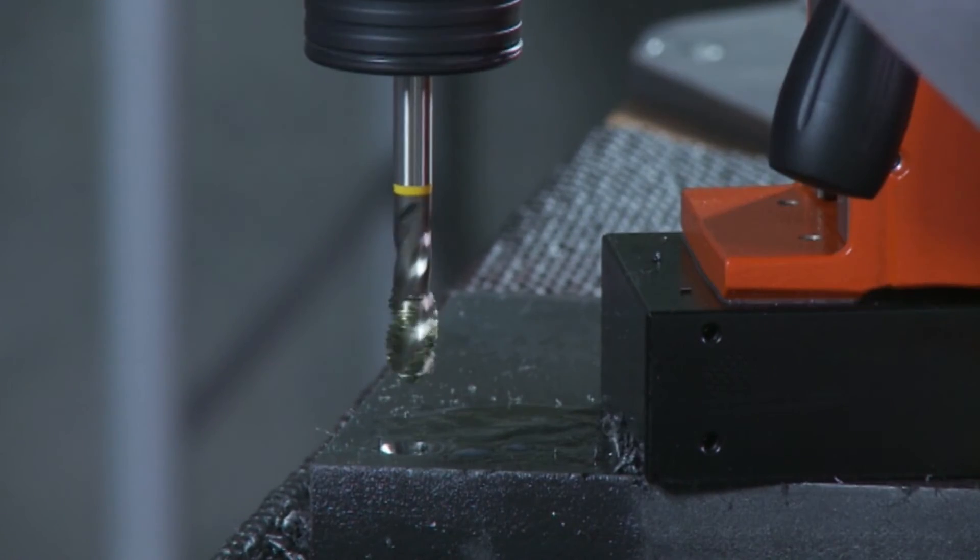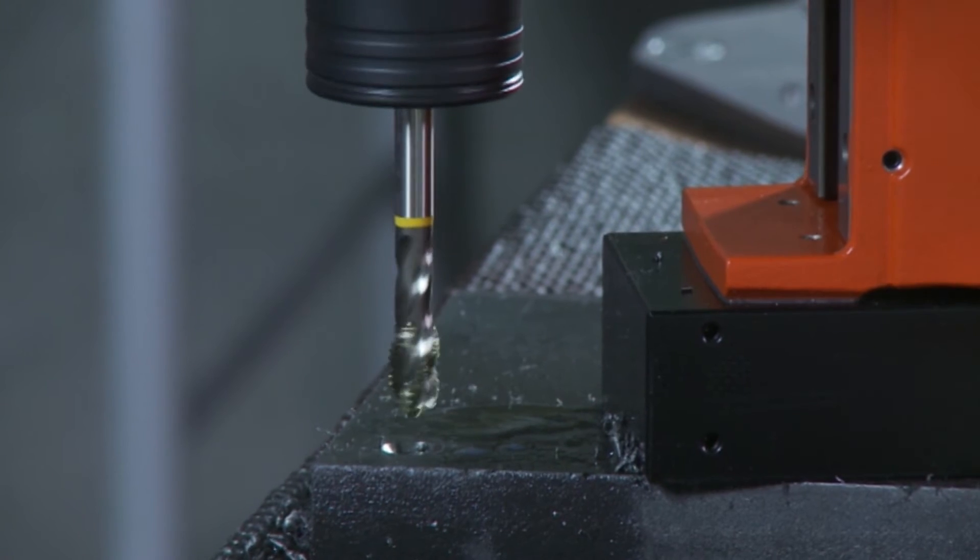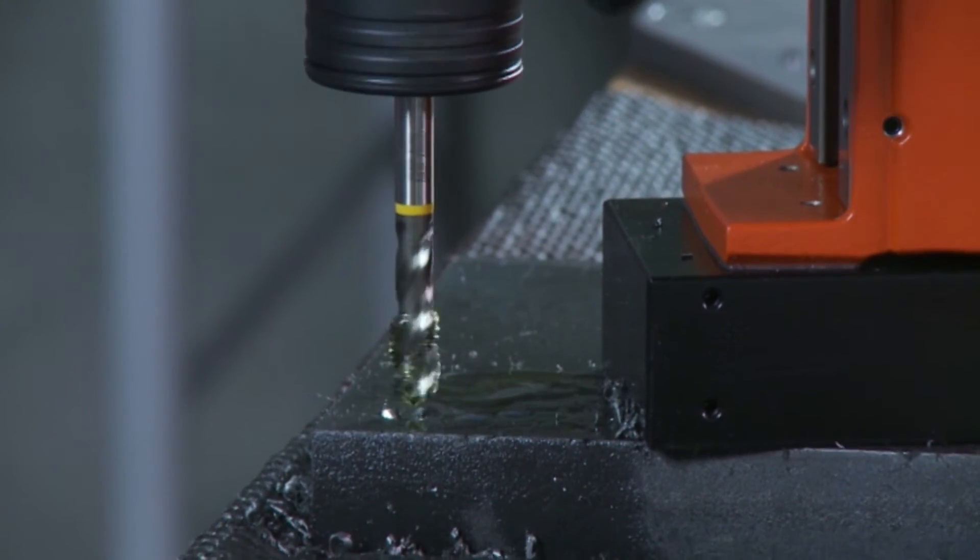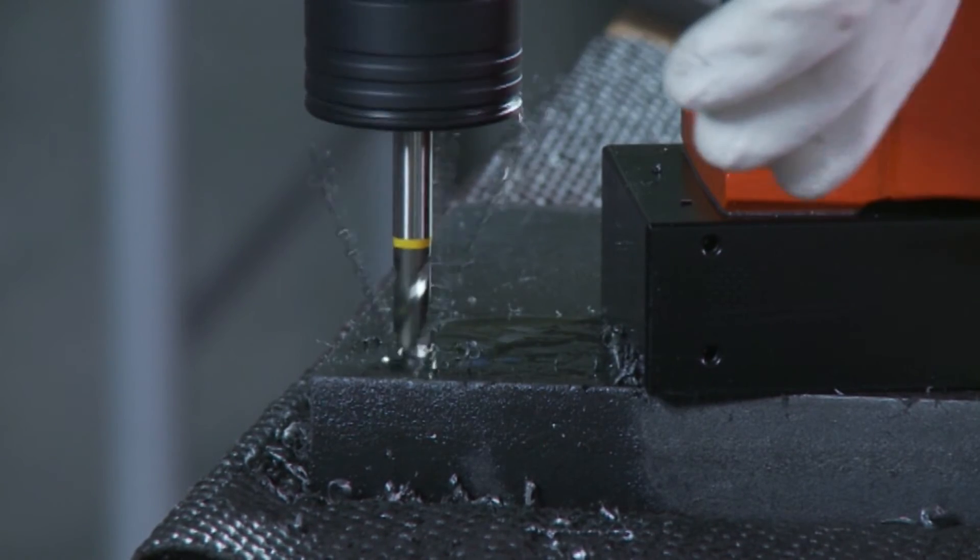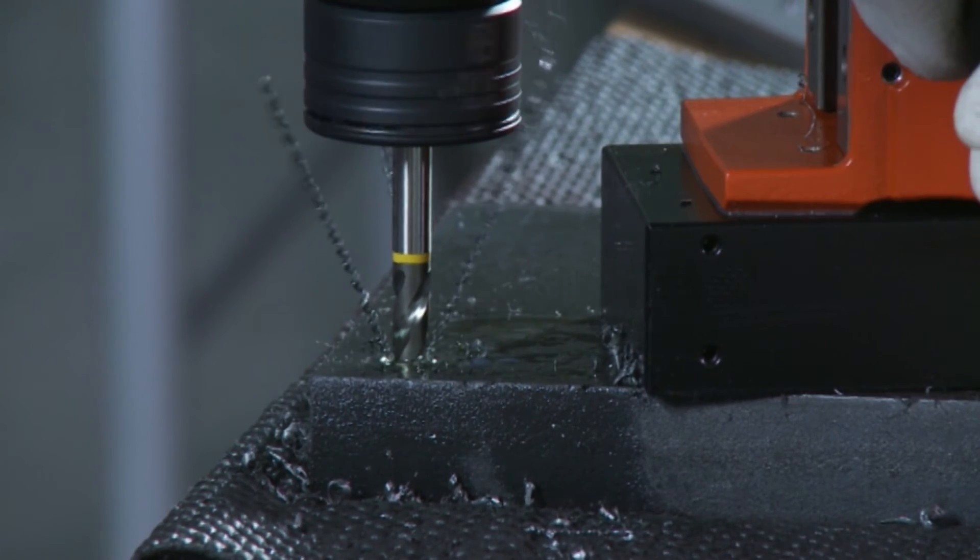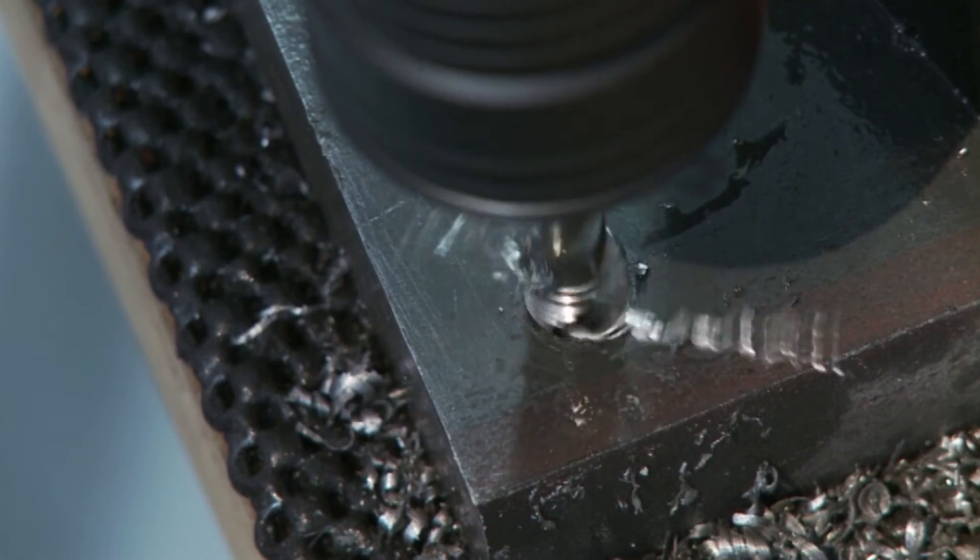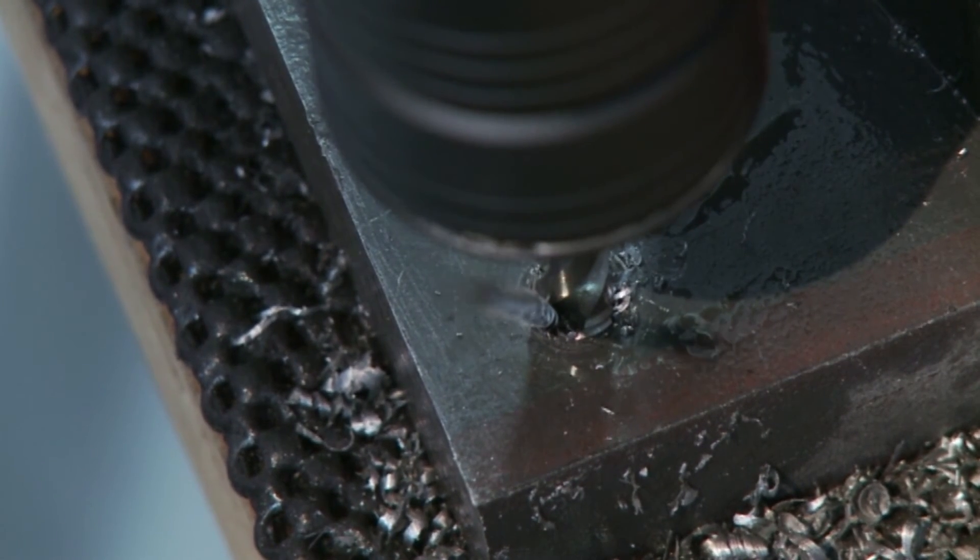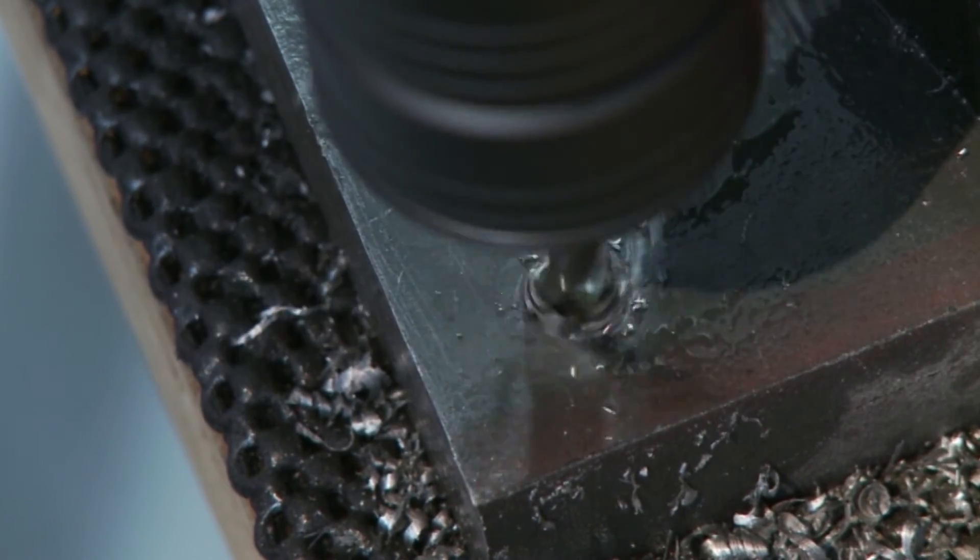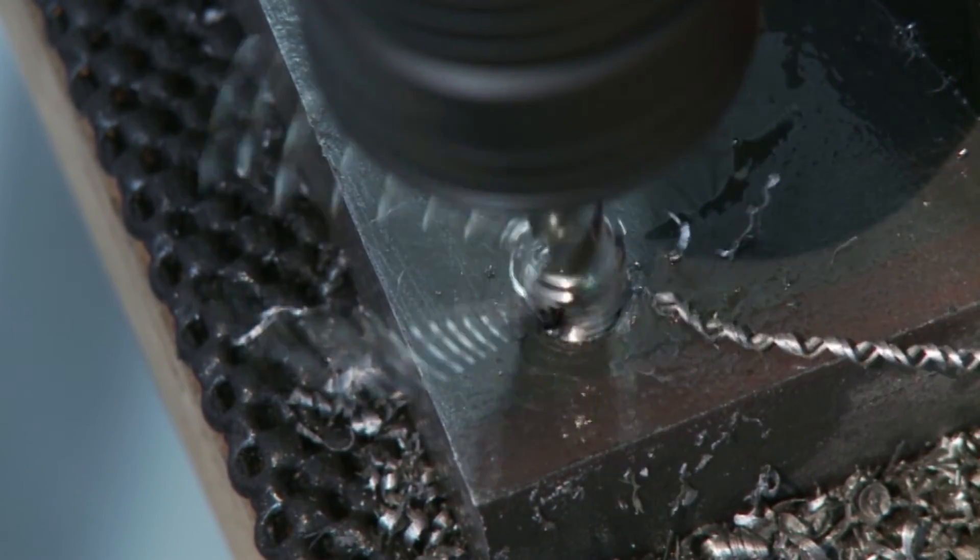As soon as the tap binds at the bottom of the blind hole, the torque slip clutch of the collet trips and begins to slip. Then stop the core drilling unit and use reverse rotation to withdraw the tap.